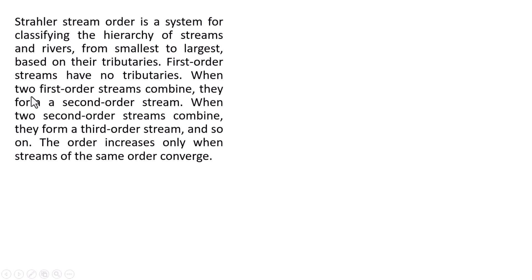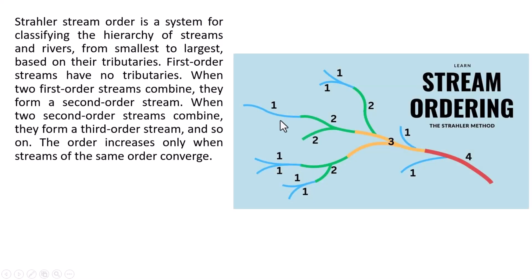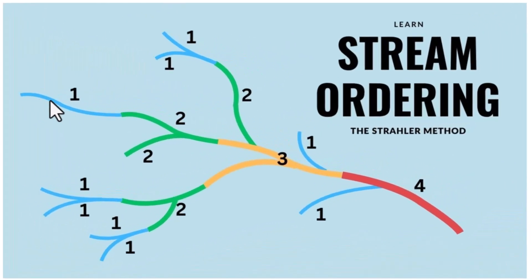The Strahler stream order is a system for classifying the hierarchy of streams and rivers from smallest to largest based on their tributaries. First-order streams have no tributaries. When two first-order streams combine they form a second-order stream. When two second-order streams combine they form a third-order stream, and so on — the order increases only when streams of the same order converge.